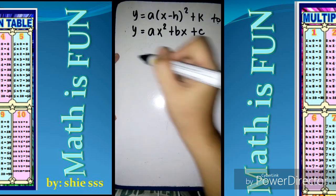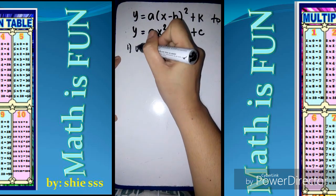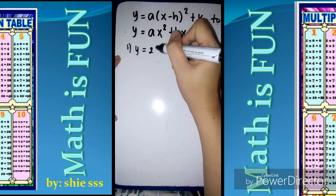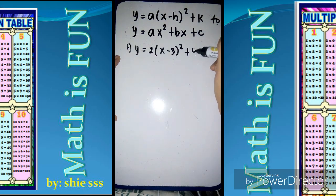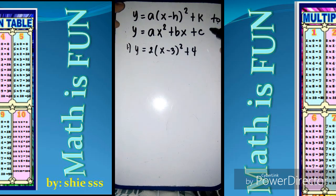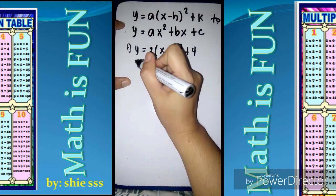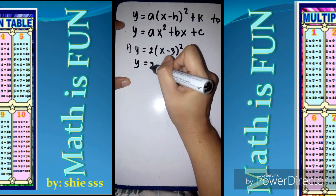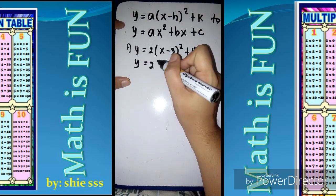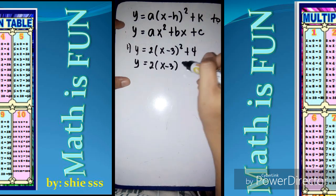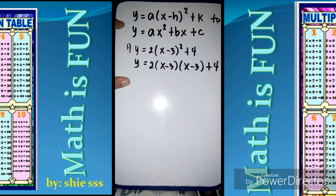So let's have number one example: y equals 2 times x minus 3 squared plus 4. This is in vertex form. In order to transform it into general form, the first step is to expand the given x minus 3 squared, meaning you multiply x minus 3 two times, so x minus 3 times x minus 3, plus 4.